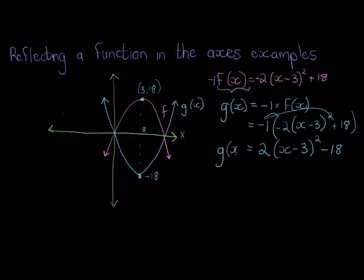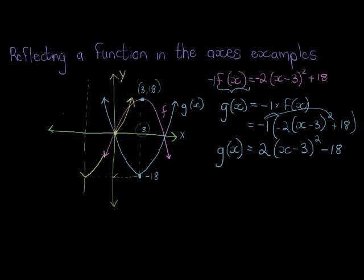That's the function formula for g(x). Now how about reflecting in the y-axis? Let's take g(x) and reflect it in the y-axis. Now the turning point goes this way, and where I used to have my symmetry axis at 3, now my symmetry axis will be at negative 3. The new coordinate for the turning point is negative 3 comma negative 18.